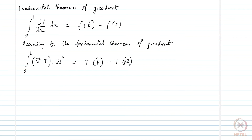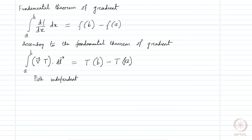It only depends on the values of t at the end points, point a and point b. It does not depend on which path we take to go from a to b. In other words, it is path independent. We will not actually prove this theorem; rather, we will see examples of it so that we can work it out whenever necessary.